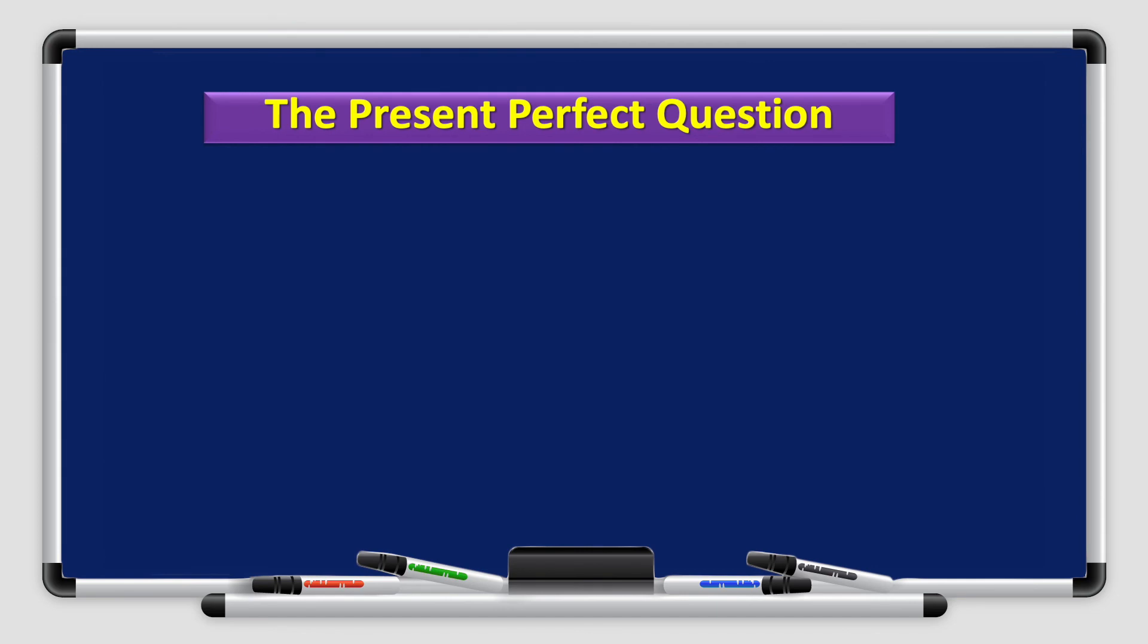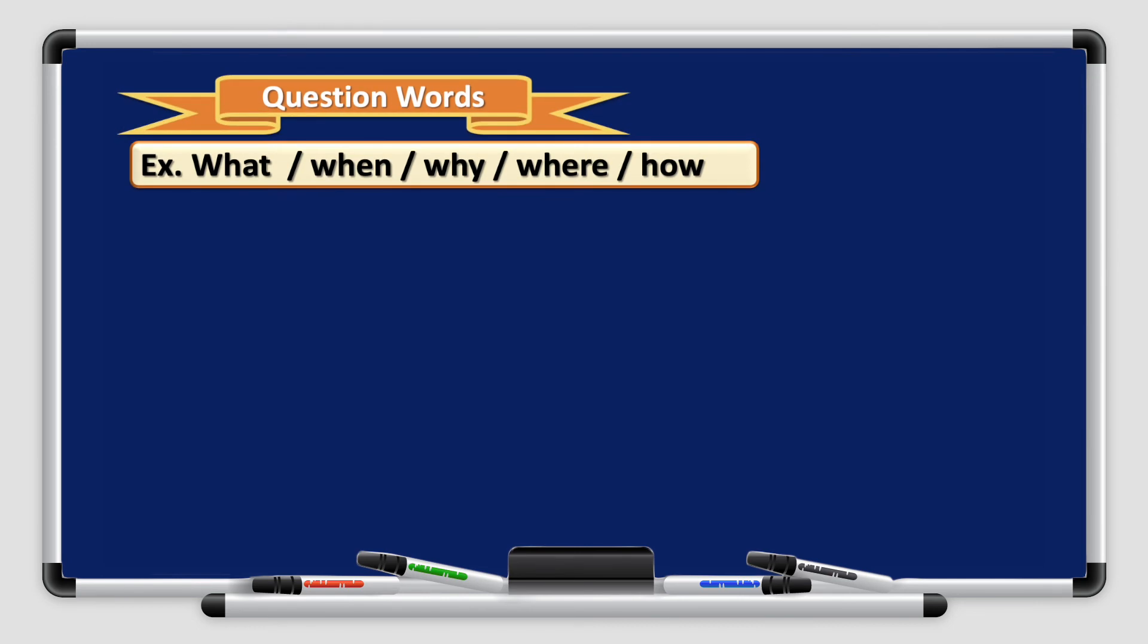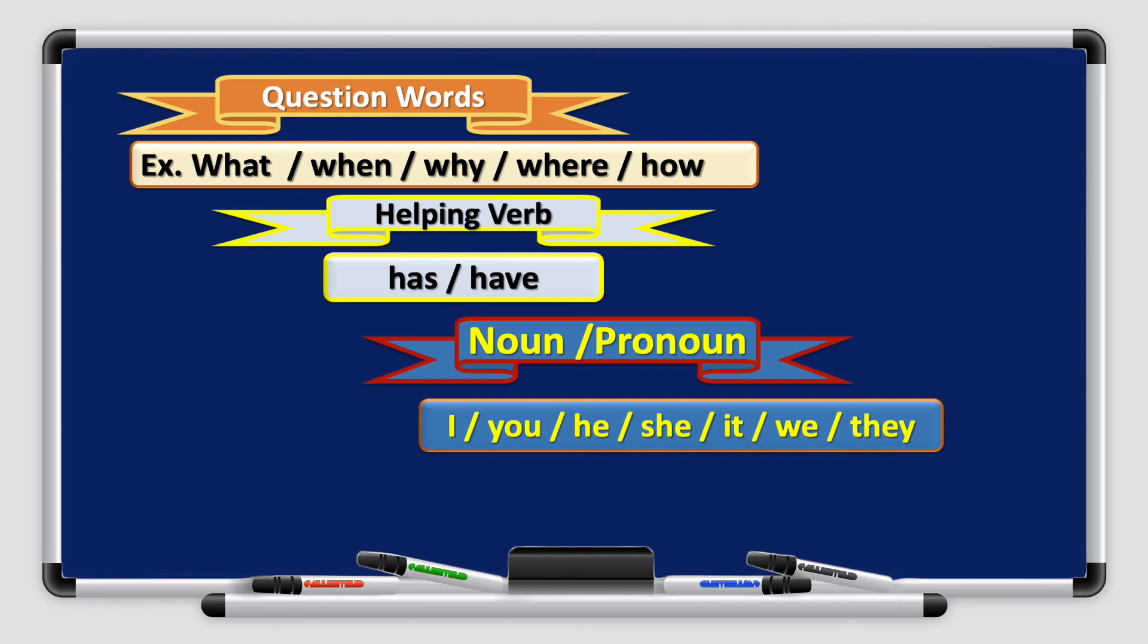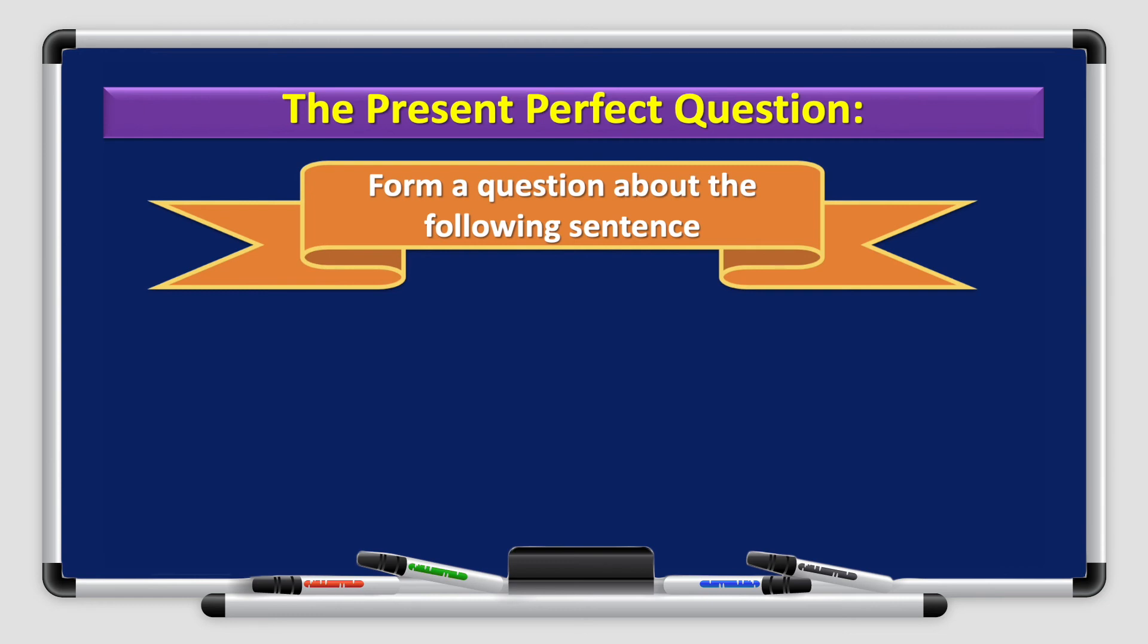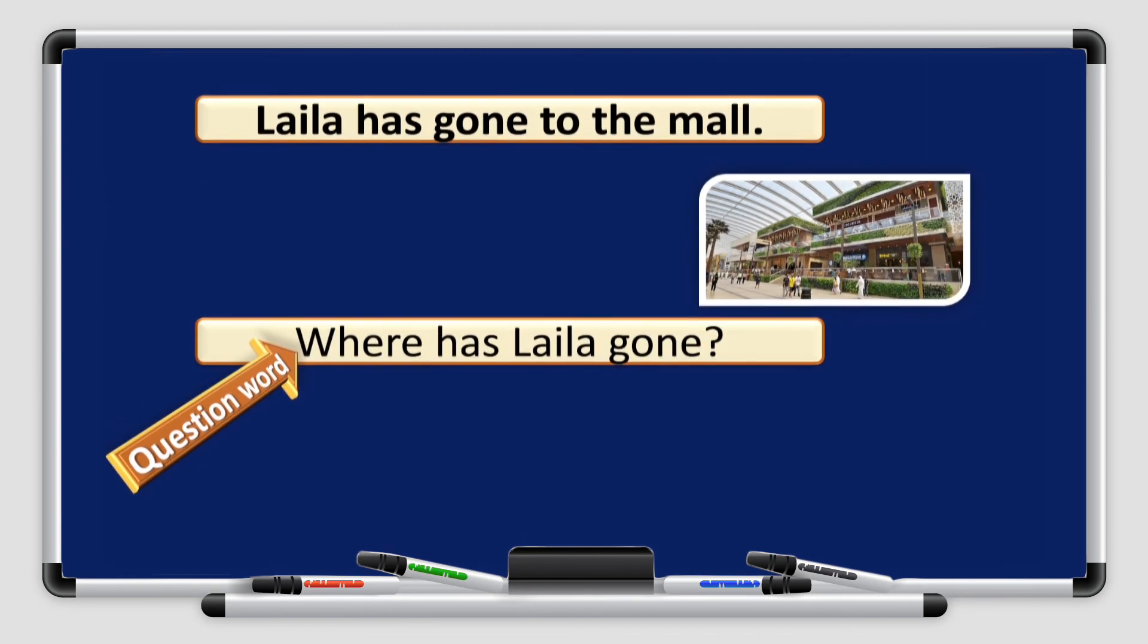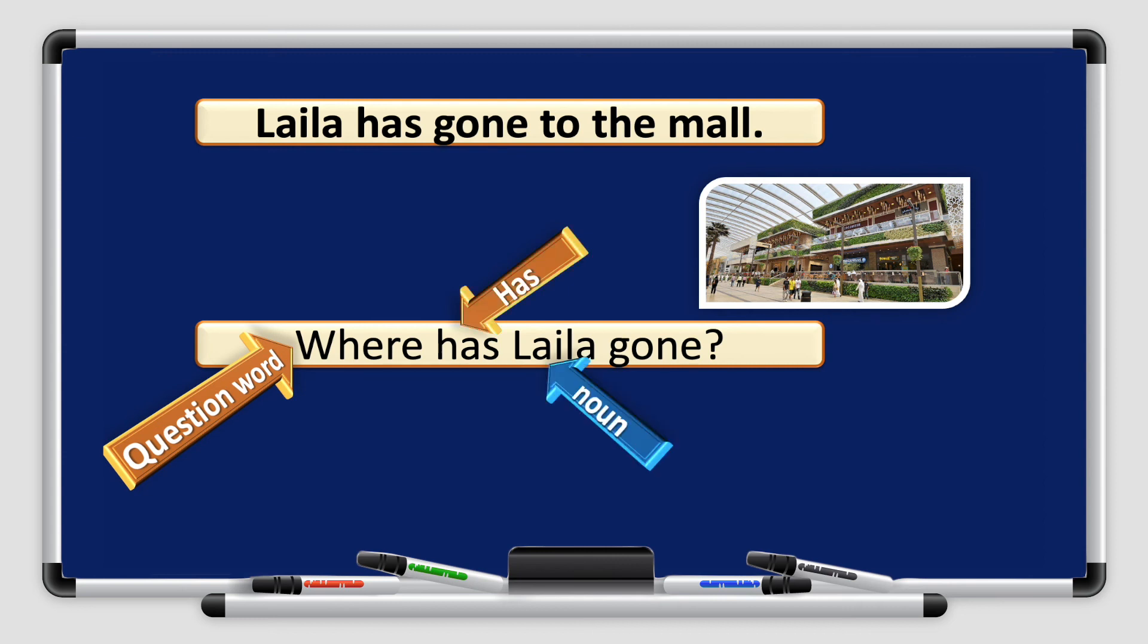I want to form a present perfect question. How do I do that? I start with question words, either what, when, why, where, or how, followed by the helping verb, has or have, followed by the noun or pronoun, I, you, he, she, it, we, they, and followed by the past participle. Now let's put that into practice. Layla has gone to the mall. How can I form a question? Where has Layla gone? I start with the question word, followed by has, followed by our noun, Layla, and followed by the past participle, gone.